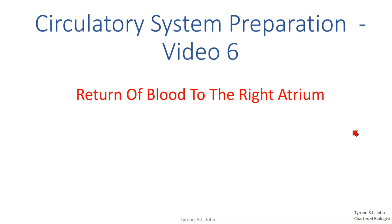In this video we're going to look at the return of blood to the right atrium through the inferior vena cava — the vena cava below the heart. Basically, we're looking at the return of blood from the feet, legs, and abdomen — everything below the heart. Blood has to return to the heart against gravity, and the flow of blood in veins is very sluggish due to very low pressure, which can be an issue for returning blood from the lower body.